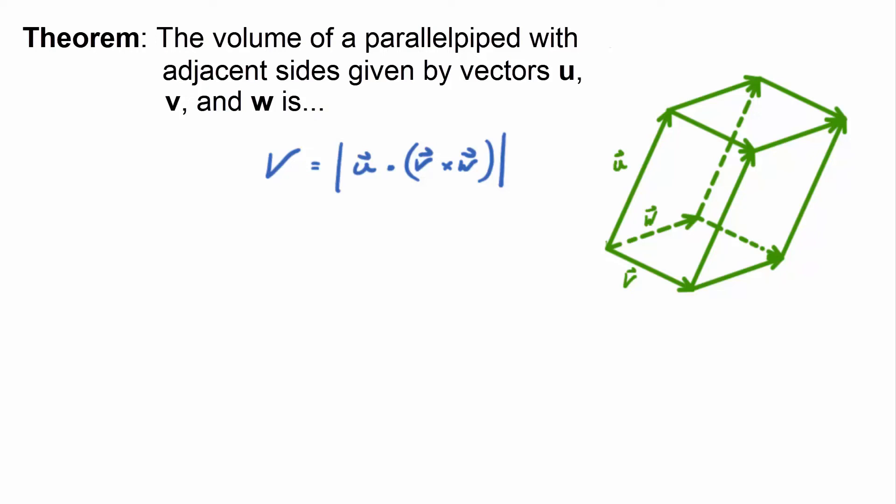So why do we care about the triple scalar product? Well, you know how the cross product was good for finding the area of a parallelogram with adjacent sides, whatever vectors you're looking at? It turns out that the triple scalar product, as long as you take the absolute value because it could be negative, as long as you take the absolute value of the triple scalar product with adjacent sides U, V, and W, you can get the volume of the associated parallelepiped.